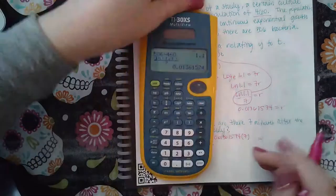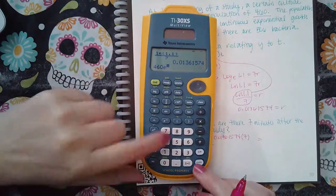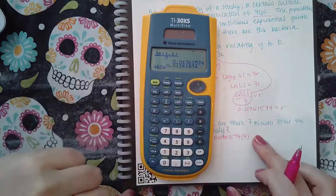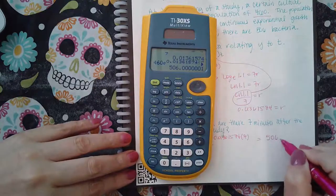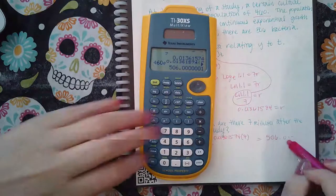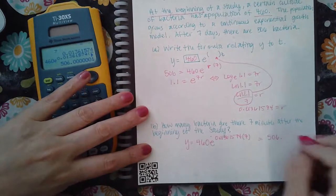So when I plug this in here, it's going to be 460, E, and then I'm just going to pull up that number times seven. And I get 506.00. And usually it tells you to round. So you just get 506.